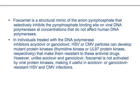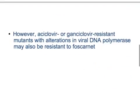Foscarnet is a structural mimic of the anion pyrophosphate that selectively inhibits the pyrophosphate binding site on viral DNA polymerases at concentrations that do not affect human DNA polymerases. In individuals treated with DNA polymerase inhibitors — acyclovir or gancyclovir — HSV or CMV particles can develop mutations in protein kinases (thymidine kinase or UL97 protein kinase respectively) that make them resistant to these antiviral drugs. However, unlike acyclovir or gancyclovir, foscarnet is not activated by viral protein kinases, making it useful in acyclovir or gancyclovir resistant HSV and CMV infections.